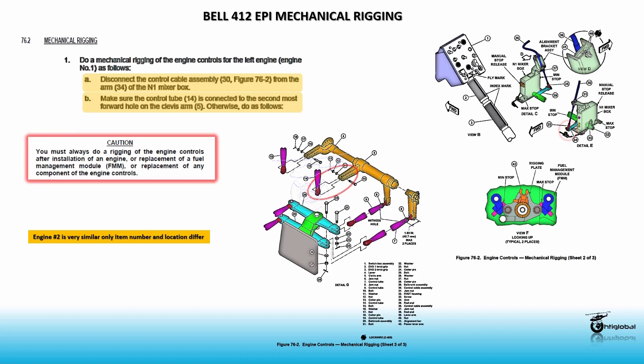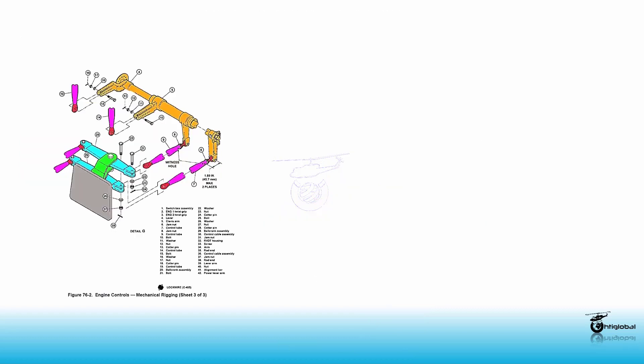Caution: you must always do a rigging of engine control after engine installation, FMM replacement, or any other engine control component. Remove the cotter pin 24, nut 23, washer 22, and bolt 21 to disconnect the control tube 9 from the bell crank assembly 20. Discard the cotter pin.